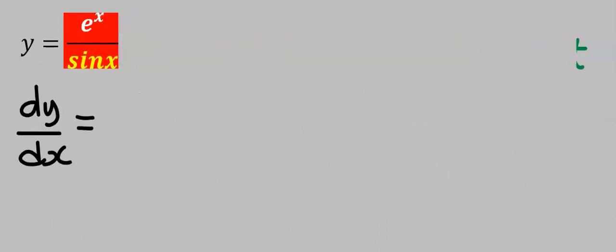The first step is to keep the denominator constant. Next, we are going to differentiate the numerator, and you have exponential x.